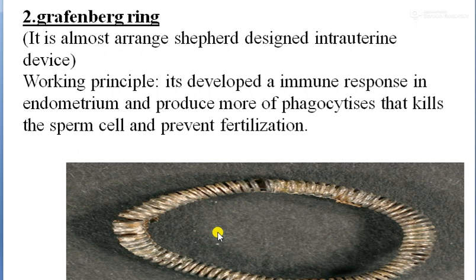When phagocytosis kills the sperm cells as well as egg cells, it passively prevents fertilization. As we know, fertilization occurs when eggs and sperm meet in the fallopian tube. When sperm cells are killed by phagocytosis, fertilization cannot occur. This is how non-medicated IUDs prevent fertilization. However, these devices are no longer in use today.